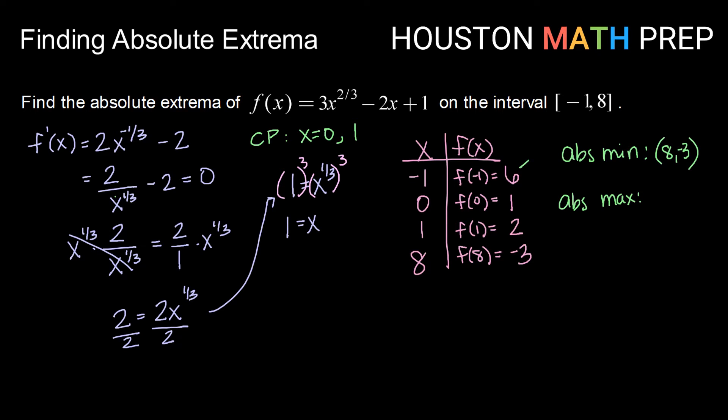And the largest y value gives me my absolute maximum. In this case, that is 6. So my absolute maximum occurs at the point negative 1, 6. An interesting thing to note here is that both our absolute minimum and our absolute maximum occurred at endpoints, not at either of our critical values. That can happen sometimes.